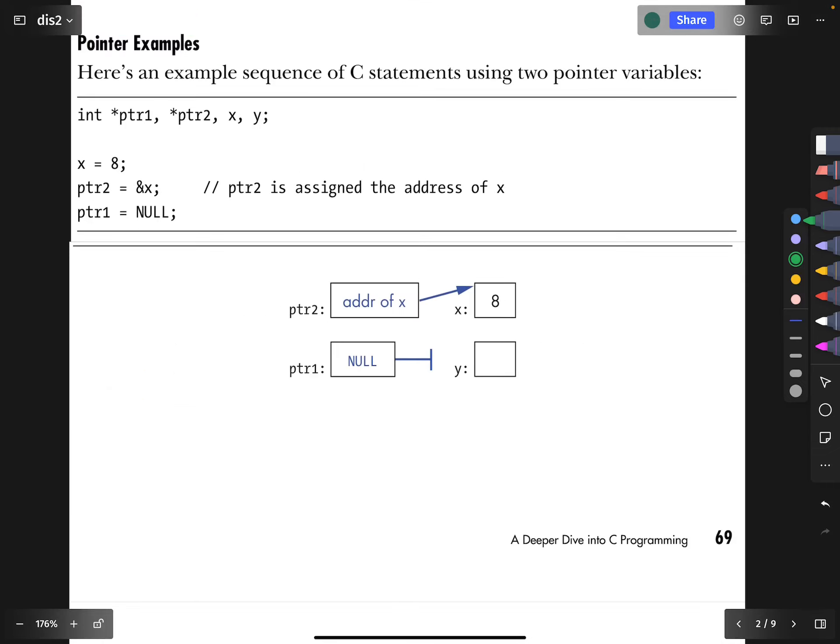There's some nice shortcut syntax, which is that you can declare int, and then star pointer one, declaring that to be a pointer to some integer. Star pointer two, declaring that to be some pointer to some integer. And then just regular x and y, declaring those to just be regular ints. It's kind of nice to know that you can write int once and declare some things to be pointers and other things to just be ints, all in the same line.